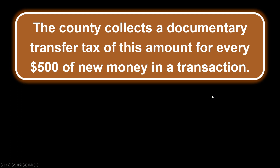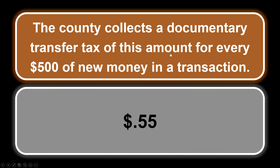The county collects a documentary transfer tax of this amount for every $500 of new money in a transaction. For every $500 of new money in the transaction, the county takes $0.55. Another way to look at it: $1.10 for every $1,000. New money includes new loans and new cash, but it does not apply to loan assumptions because that's not new money in the transaction.